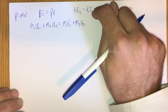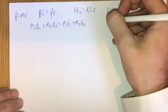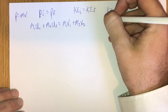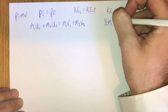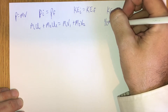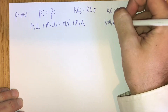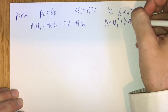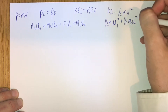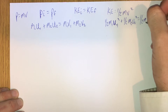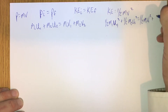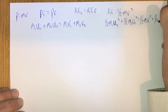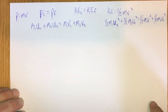We'll also think about how kinetic energy is conserved, and write that out: one-half M1 U1 squared plus one-half M2 U2 squared equals one-half M1 V1 squared plus one-half M2 V2 squared.